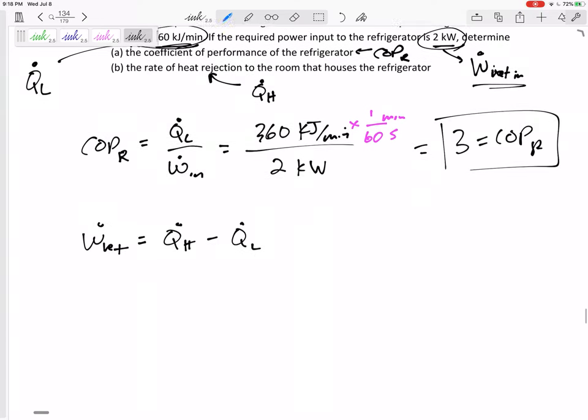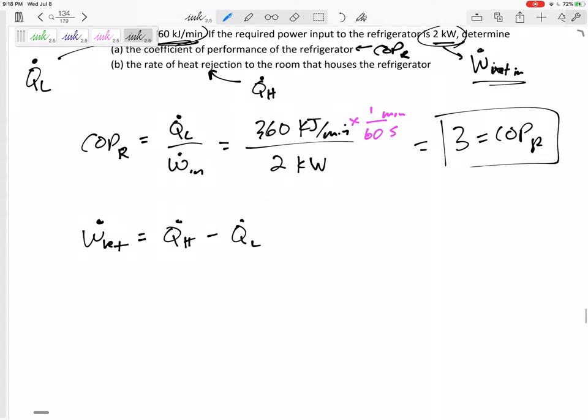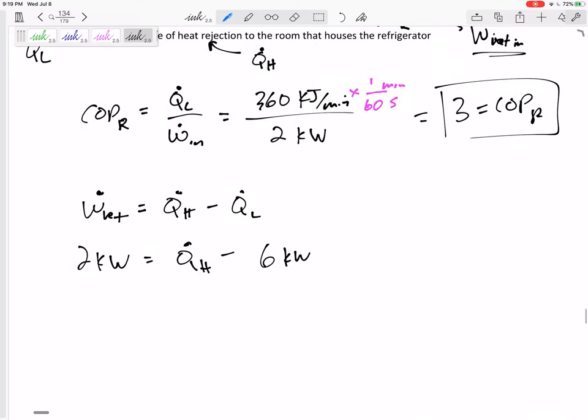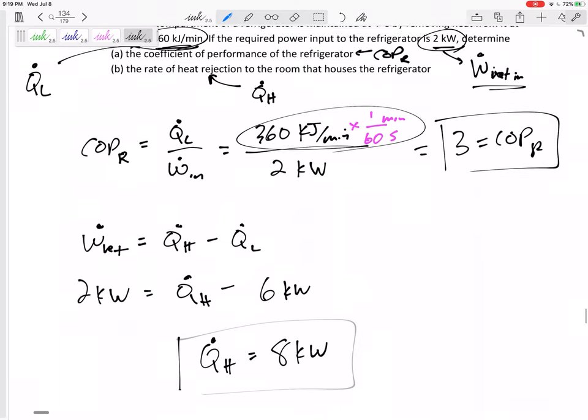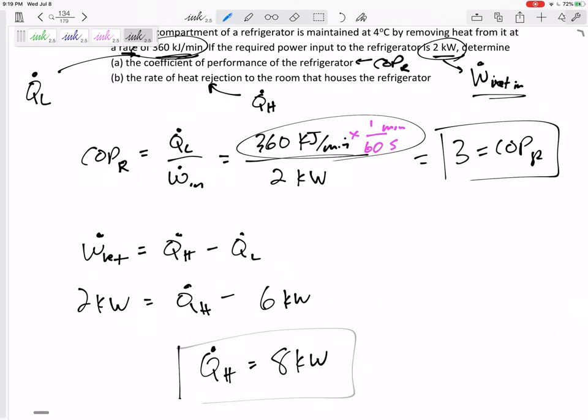Or in this case, these are dots, right? These are times rate of change or power. So 2 kilowatts is equal to Q_H that I'm looking for minus 360 divided by 60, minus 6, minus 6 kilowatts. 360 divided by 60. So here, Q_H is 8 kilowatts. Q_H is the rate of heat rejection to the room that houses the refrigerator.